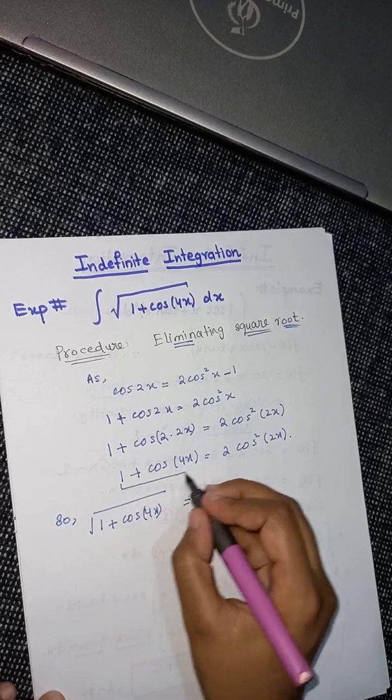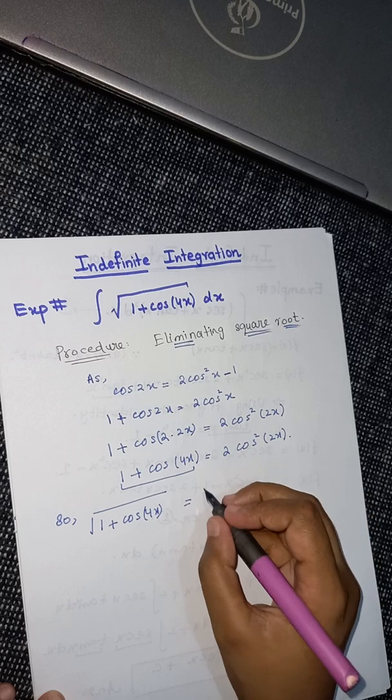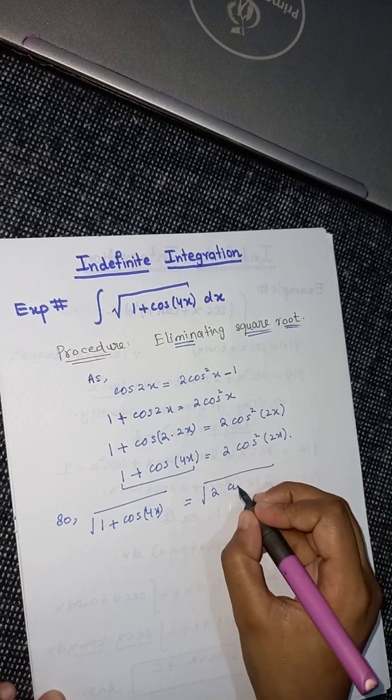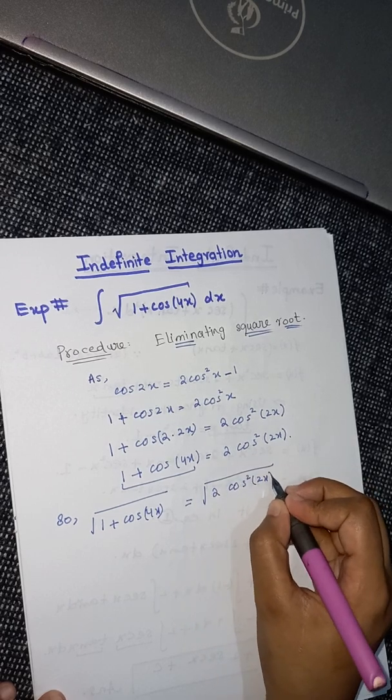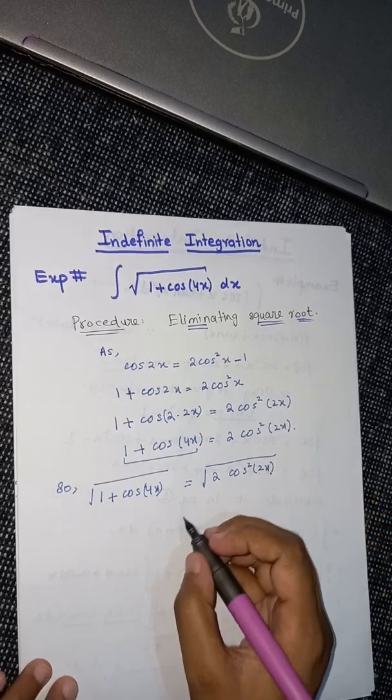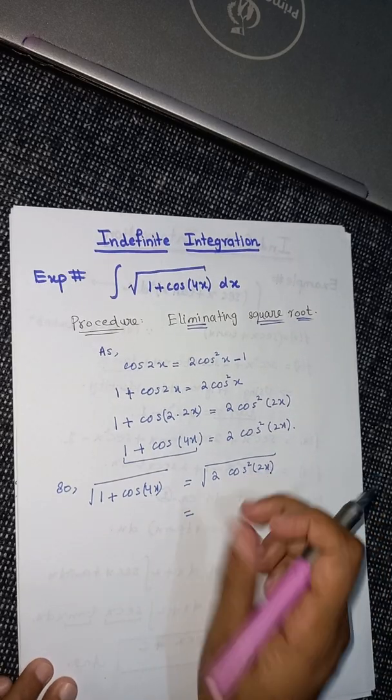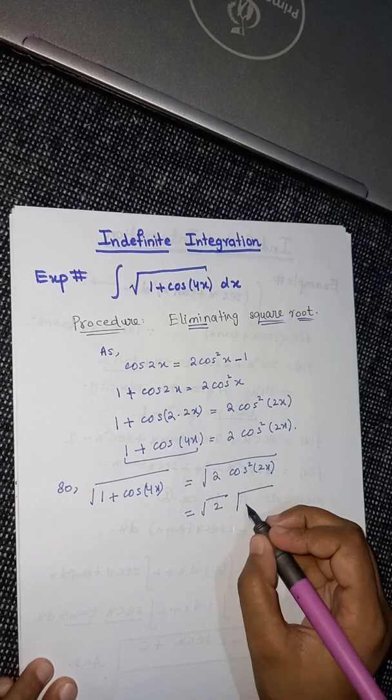Then I will get square root of 2 cos squared 2x. If I separate the square root on both of these functions, then I will get square root of cos squared 2x.